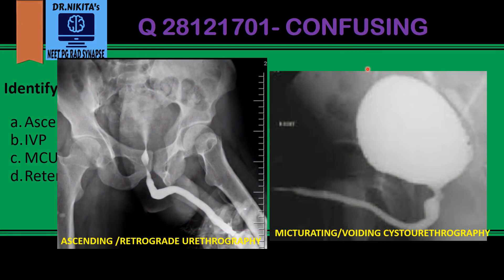Coming to the next two: ascending or retrograde urethrography and micturating cystourethrography. As the term says, ascending or retrograde means we are going from down to up. Urethrography means it is for the urethra — abnormalities like stricture or urethral injury. We inject the dye in the urethra, concentrating on the urethra. In this case, the bladder will not be full because we are only concentrating on the urethra.